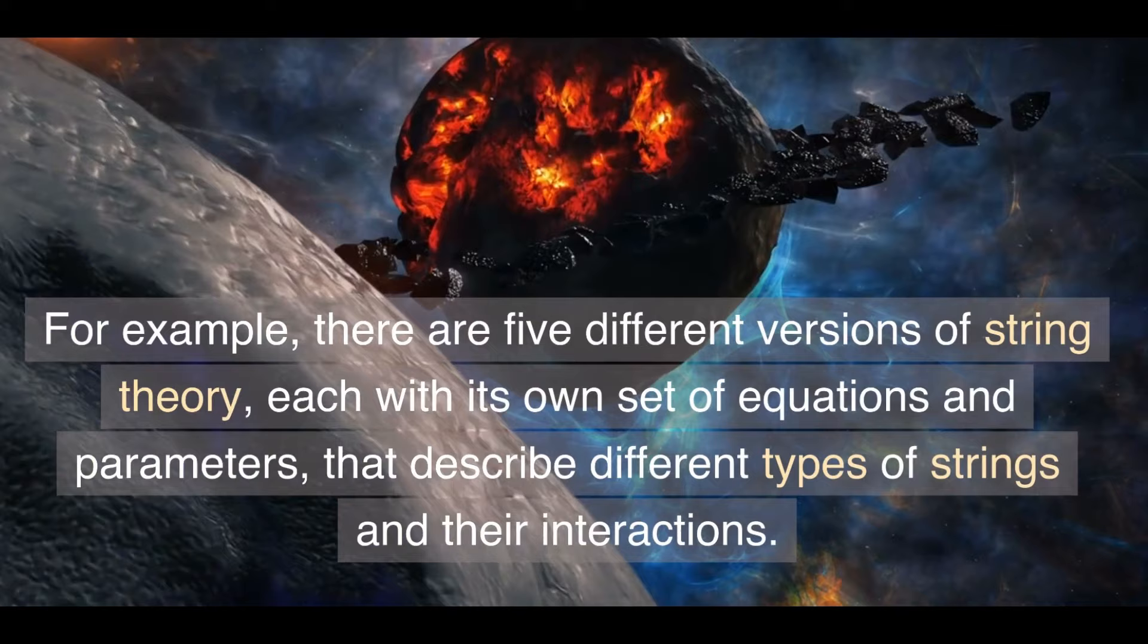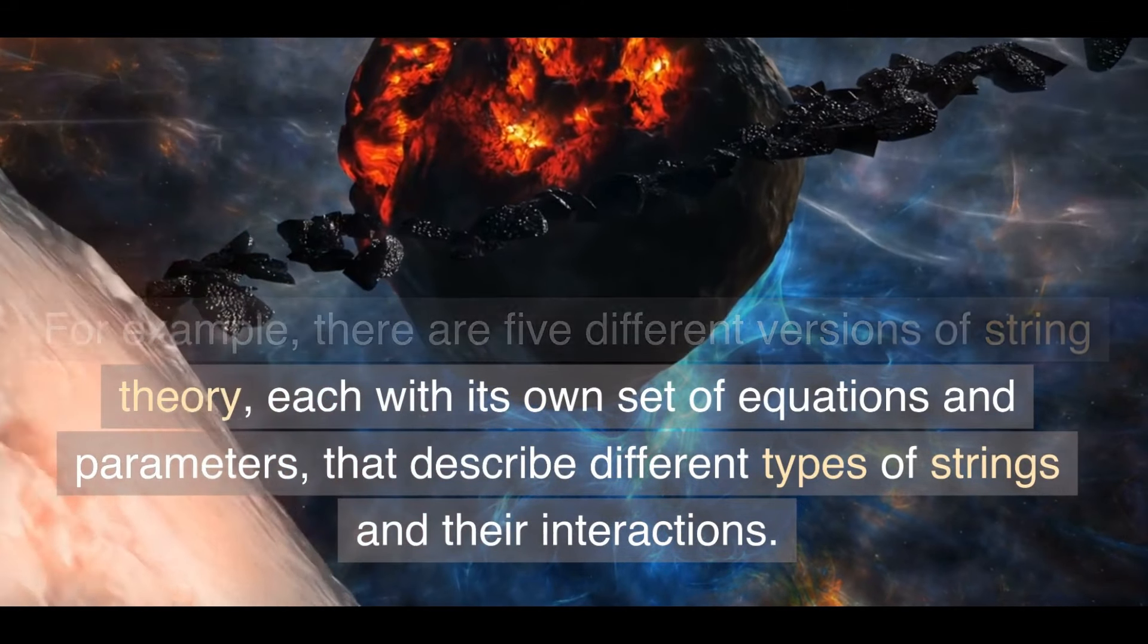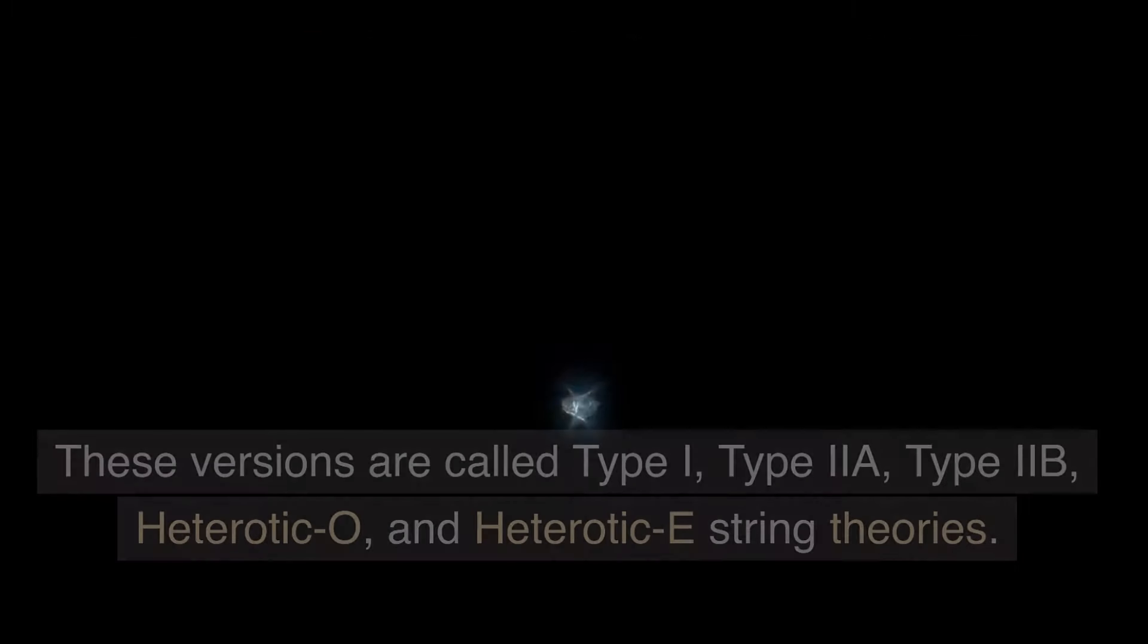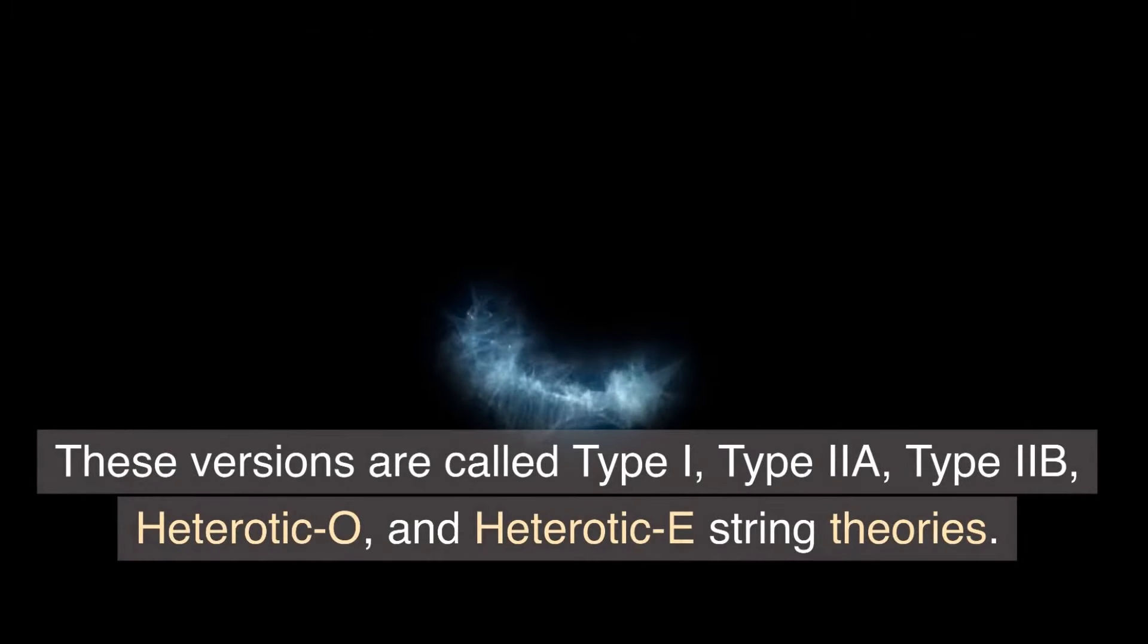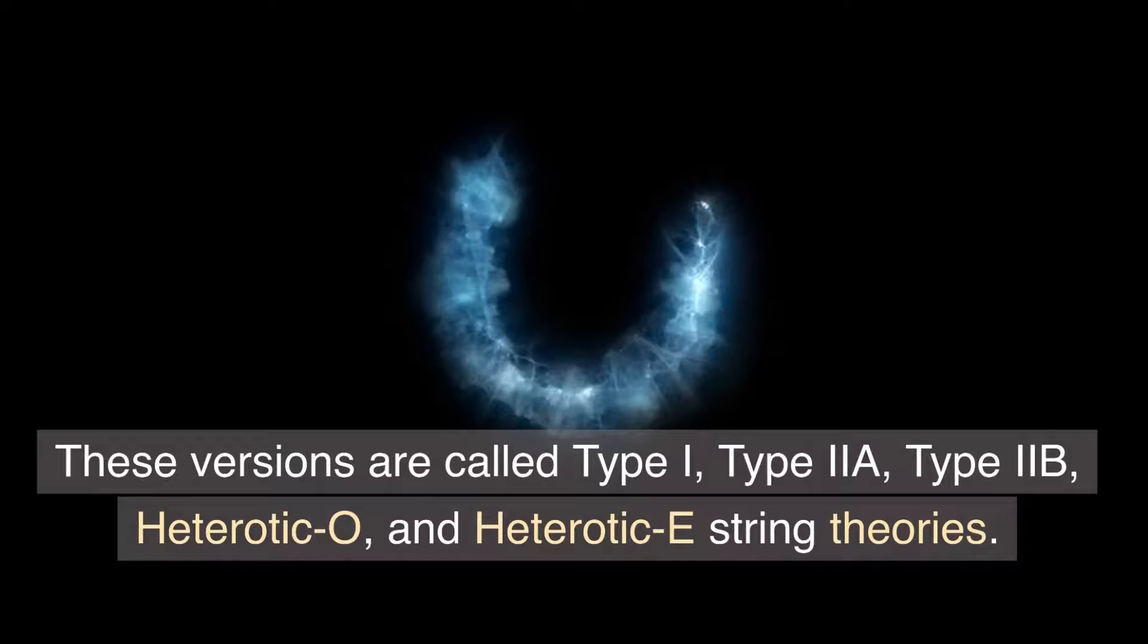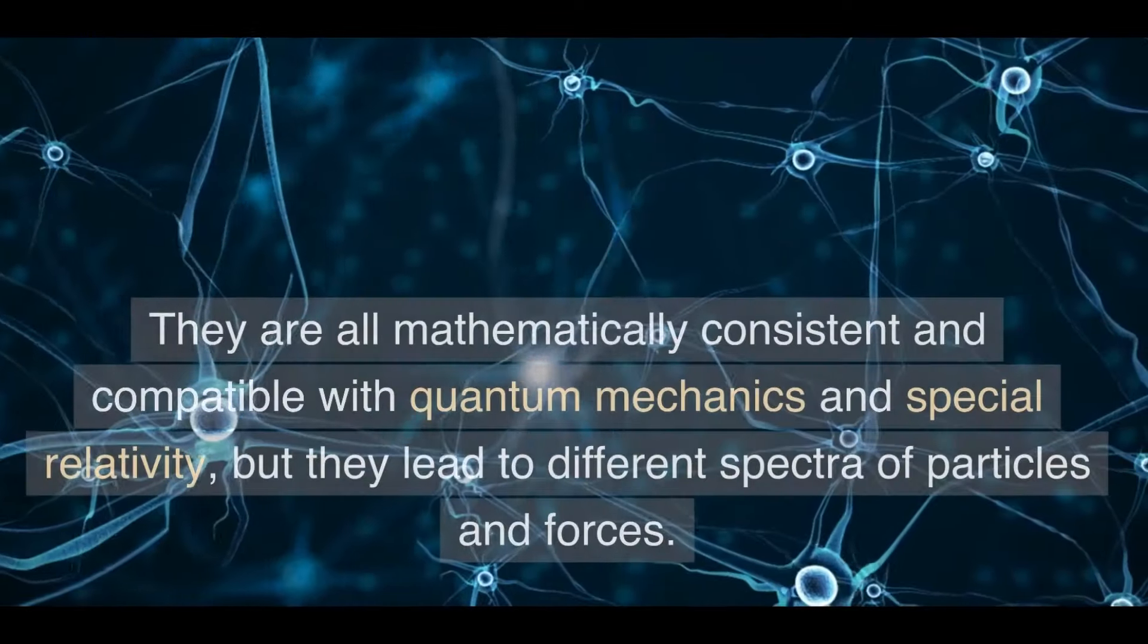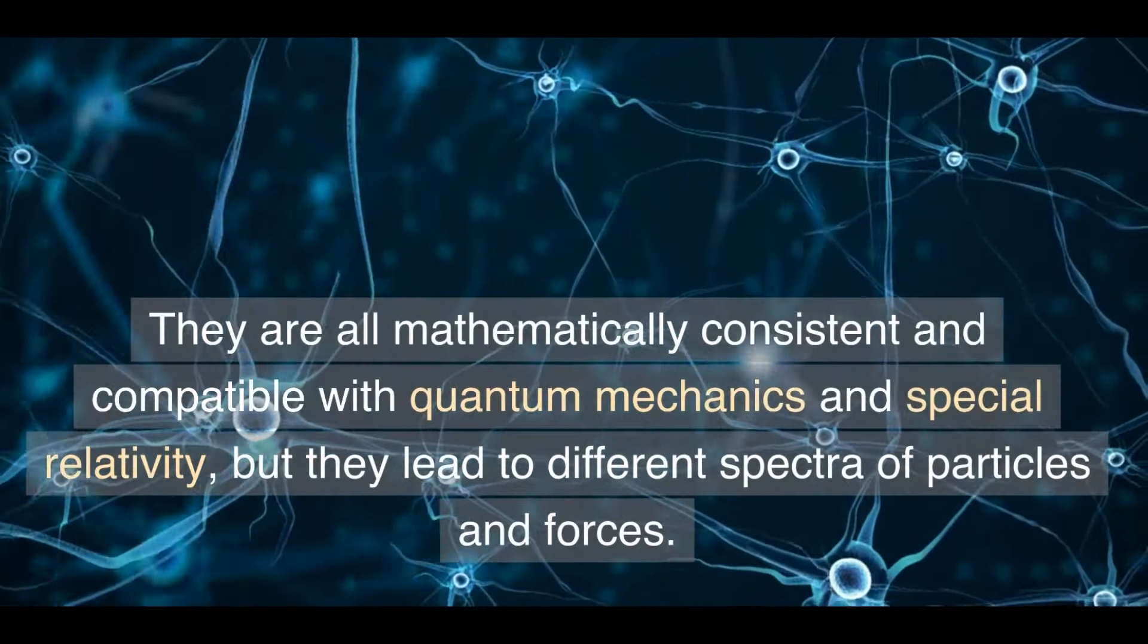For example, there are five different versions of string theory, each with its own set of equations and parameters, that describe different types of strings and their interactions. These versions are called type 1, type IIA, type IIB, heterotic O, and heterotic E string theories. They are all mathematically consistent and compatible with quantum mechanics and special relativity, but they lead to different spectra of particles and forces.